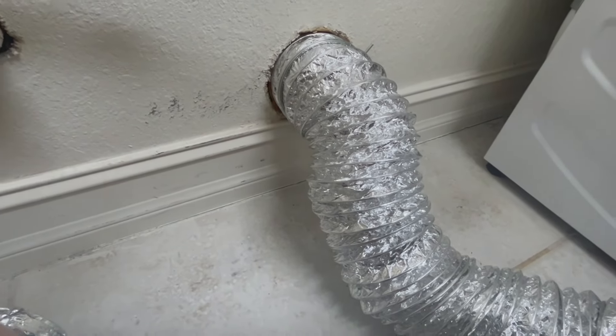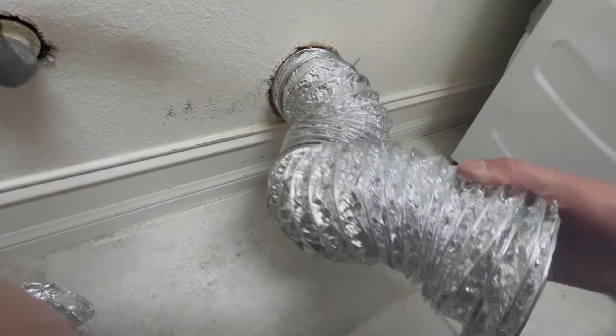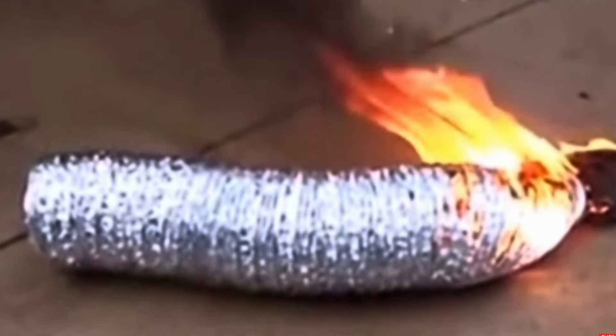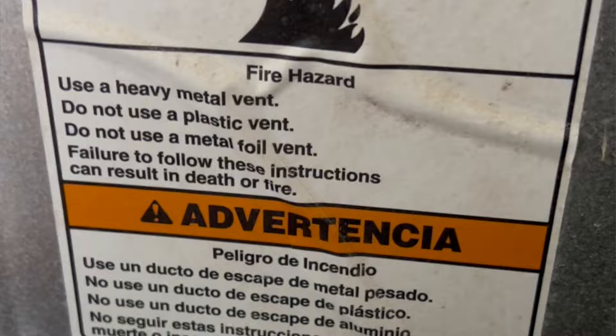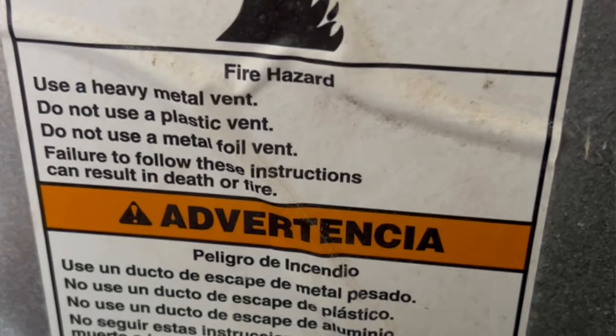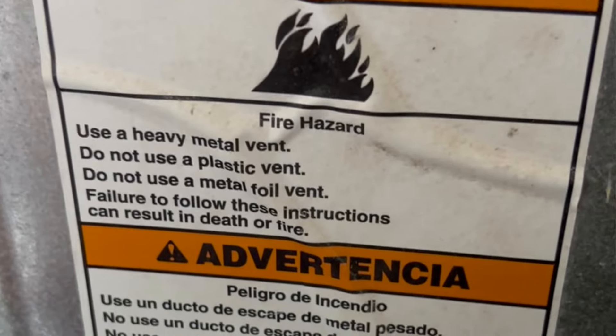If you have one of these plastic foil vents, change it immediately. These are super dangerous and there's actually a sticker on the back of all dryers that say do not use plastic foil vents. They're also attached with those flimsy spring clamps.